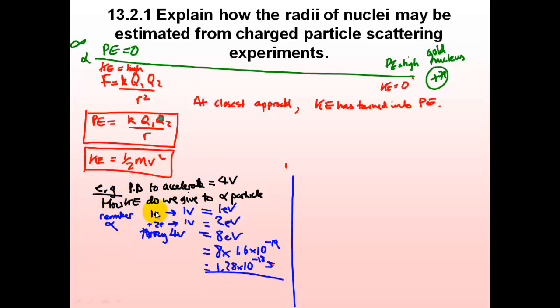For example, if you have a potential difference of four volts, how much do you give to an alpha particle? Well, if you were to give it to one electron, one volt will give you one electron volt. But an alpha particle has a plus two charge, so it's going to be two lots of one volt will give two electron volts. In this case, we have four volts, so it's going to be two lots of four, which will be eight electron volts, times by the charge of one electron. And we end up with 1.28 times 10 to the negative 18 joules.